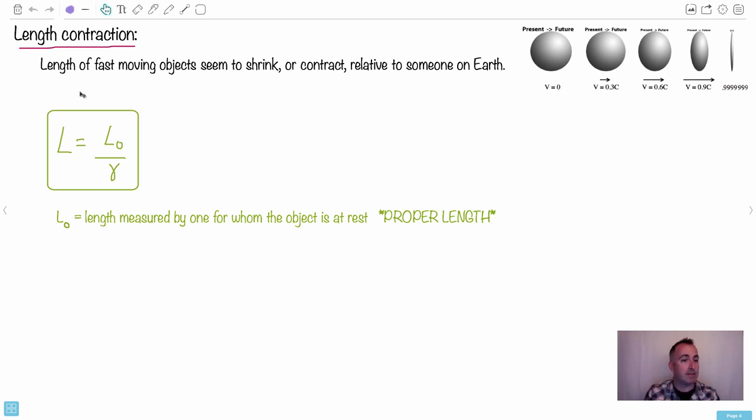The length of a fast moving object, that's going to be really important here. So we're going to talk about L₀. L₀ is going to be the length measured by one for whom the object is at rest. So that's going to be called the proper length. Then the other length is the one measured by someone who the object isn't at rest.